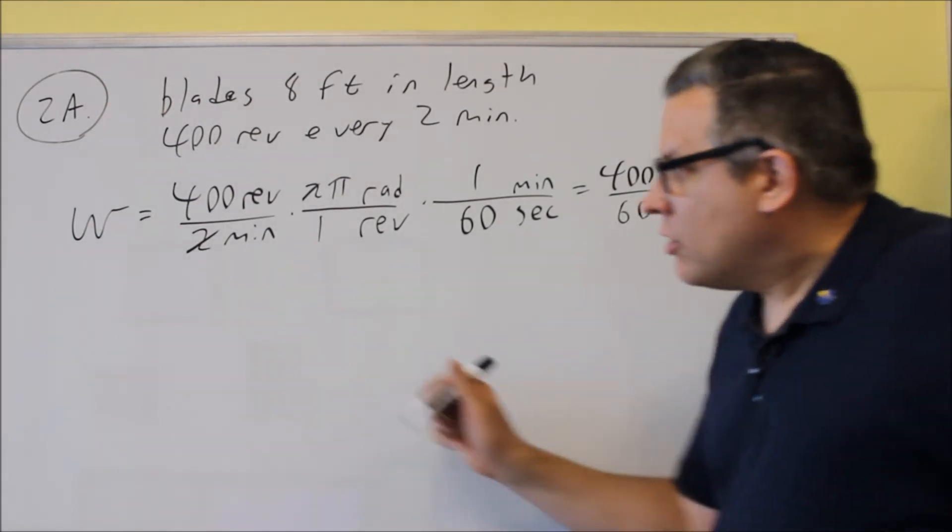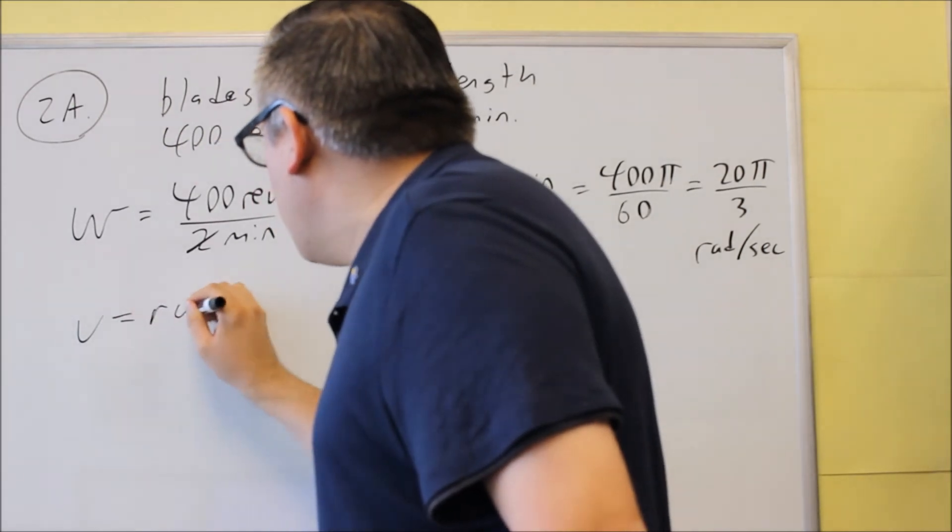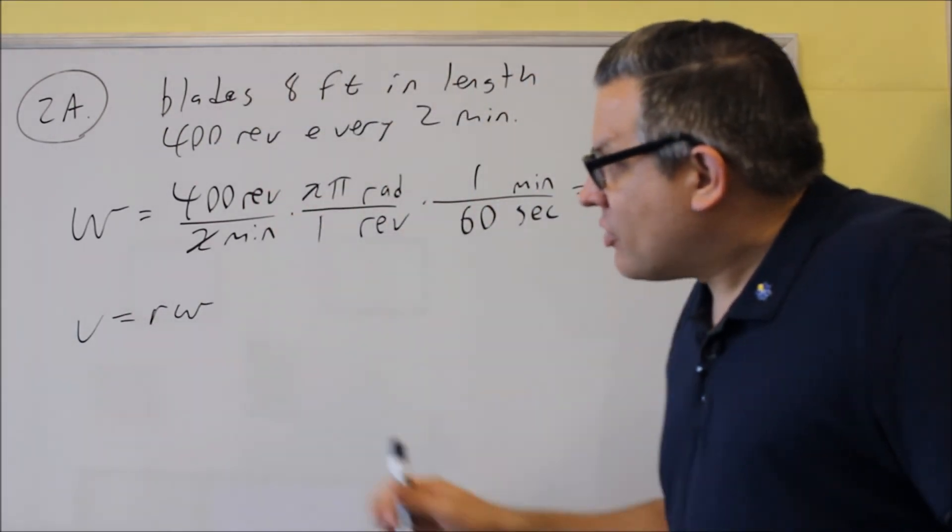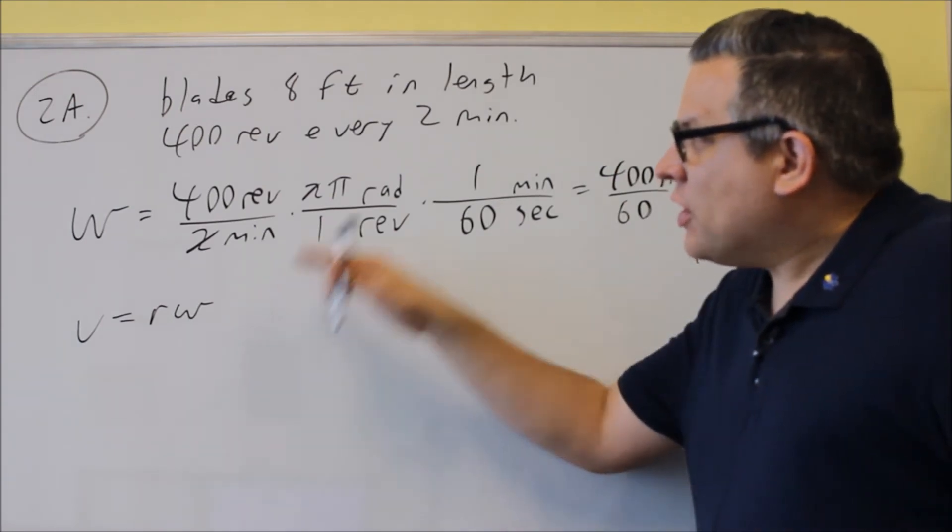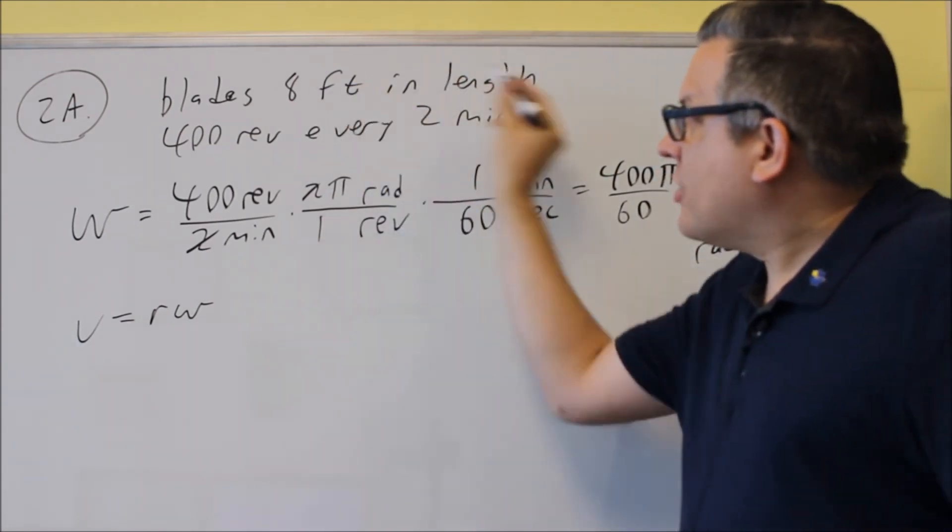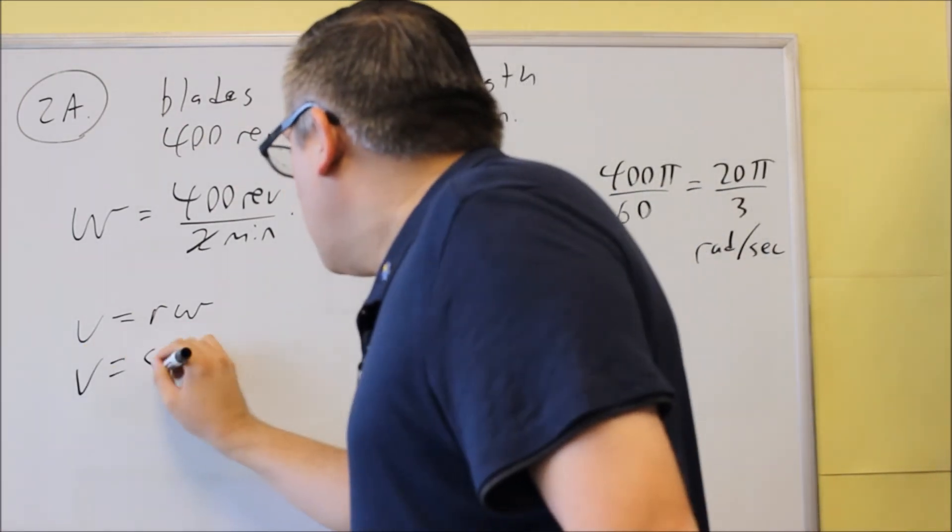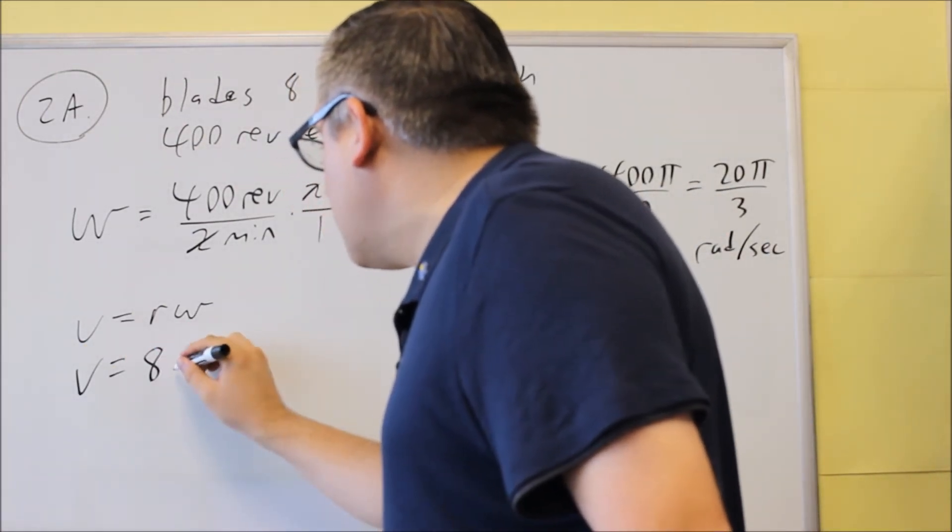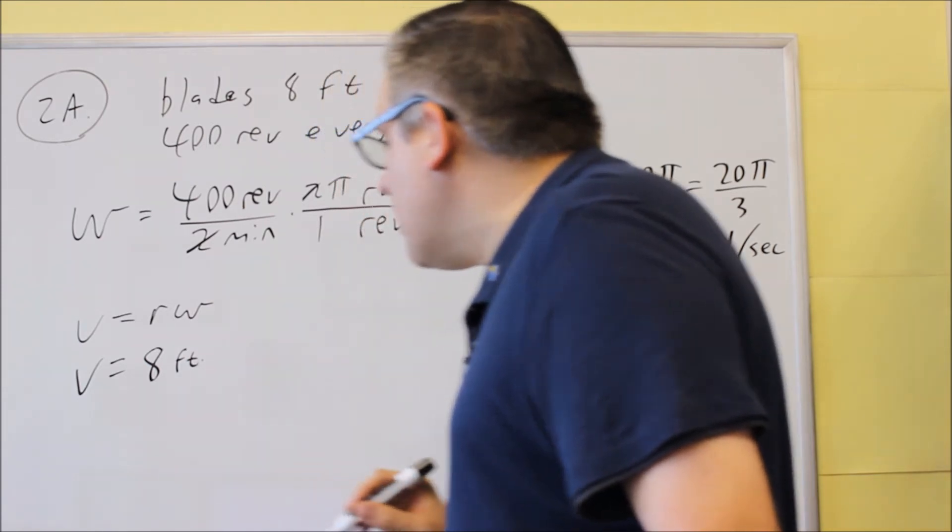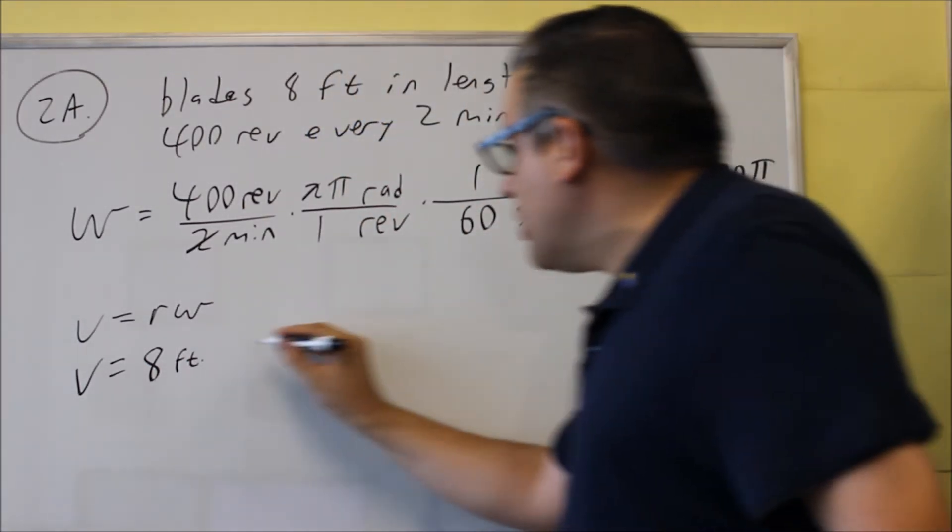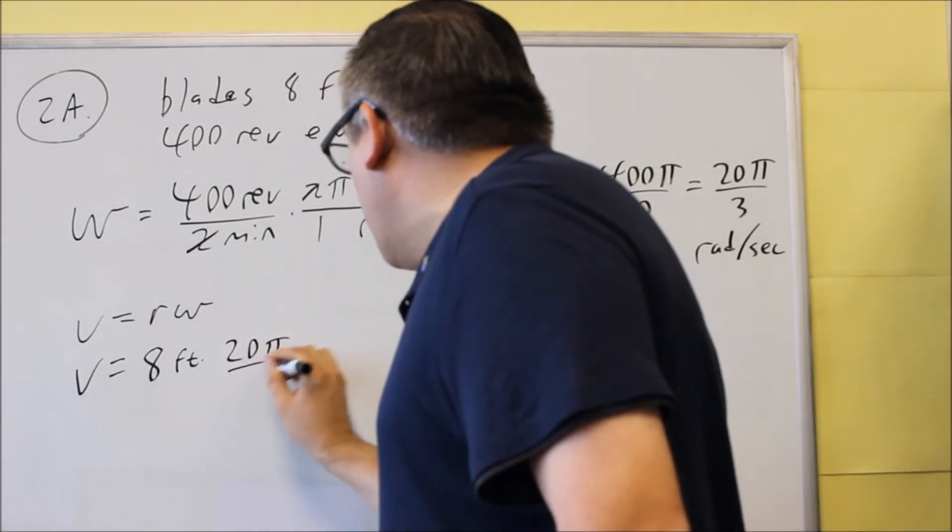Now next we want linear speed. Linear speed is using v equals r omega. Now the radius, they're asking for linear speed at the tip of the blades. So since the blades are 8 feet in length that's our radius that we're going to use here. The units on that would be feet on that one. And then the omega was the 20π over 3.